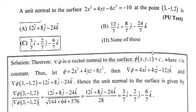In the name of Allah, the most merciful and the most beneficent. Hello everyone, welcome to mathematics basic to advanced level. In this lecture I will solve Punjab University test MCQ: a unit normal to the surface 2x² + 4yz - 6z² = -10 at the point (3, -1, 2) is...